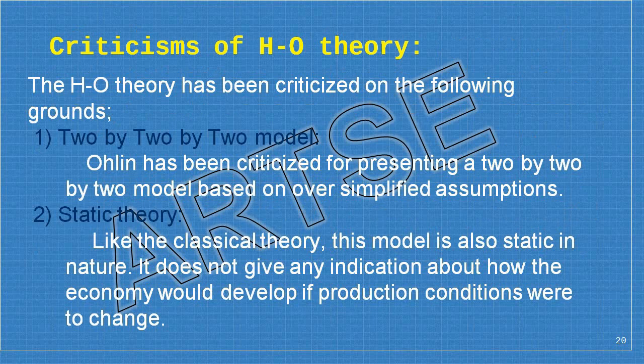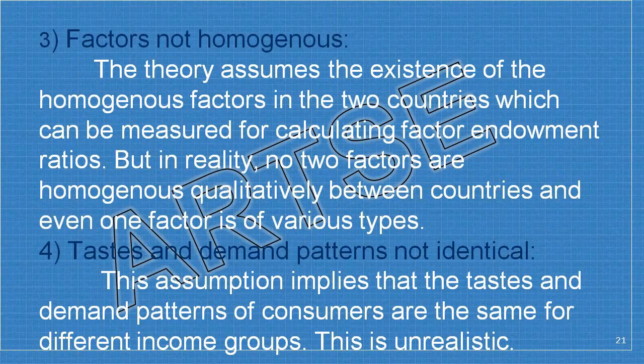The HO theory has been criticized on several grounds. First, it is a 2x2x2 model — Ohlin has been criticized for presenting an oversimplified assumption. Second, it is a static theory: like classical theory, it does not indicate how the economy would develop if production conditions changed. Third, factors are not homogeneous — the theory assumes homogeneous factors measurable for calculating factor endowment ratios, but in reality no two factors are qualitatively homogeneous between countries.